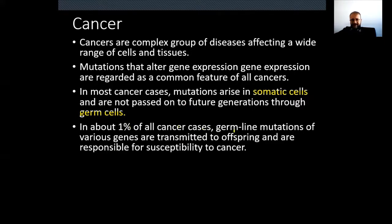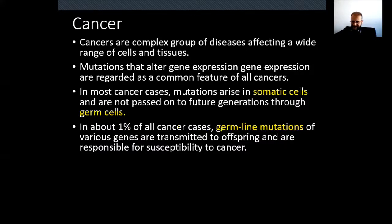About 1% of all cancer cases involve germline mutations of various genes that are transmitted to offspring generations and are responsible for susceptibility to cancer. Germline mutations cause only 1% of cancers. The rest — nearly 99% of cancers — are caused by somatic mutations, meaning mutations arising in somatic cells.